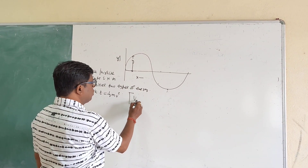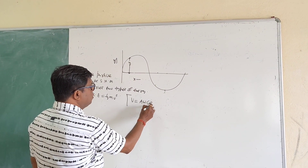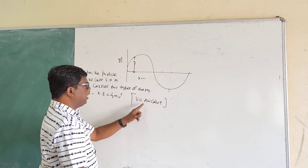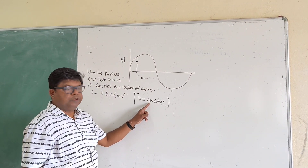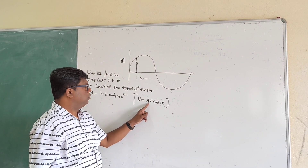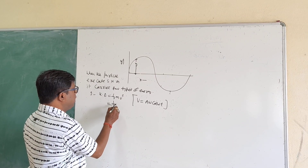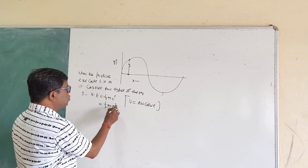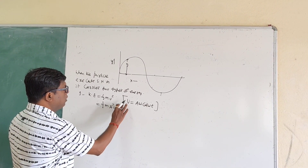The velocity of a particle executing SHM is v = aω cos(ωt), where a is the amplitude and ω is the angular frequency. So kinetic energy is ½mv² = ½mω²a²cos²(ωt).